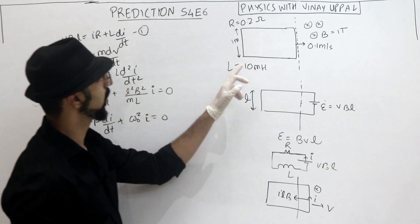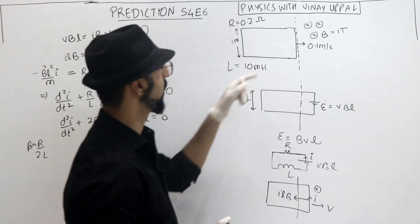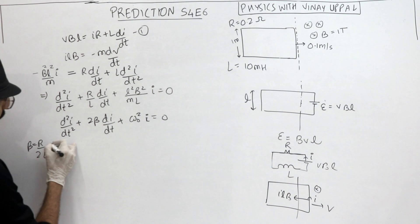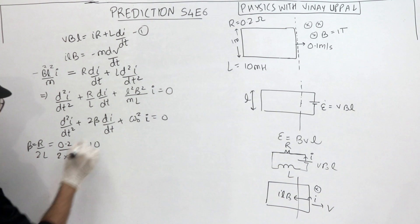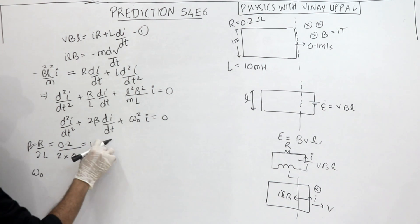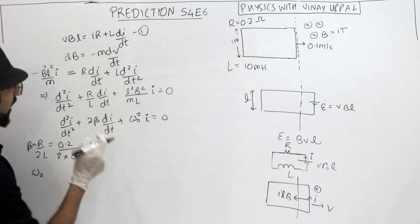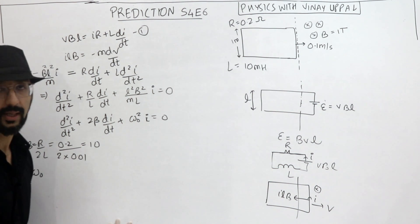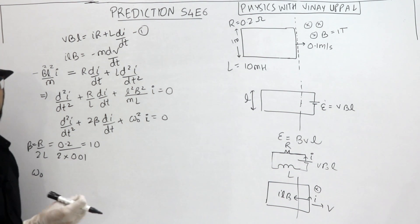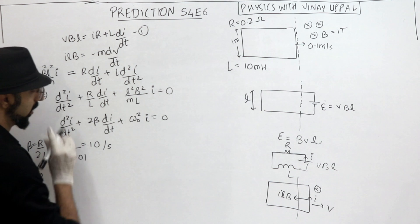So R by 2L means 0.2 ohms divided by 10 millihenry. So 0.2 ohms divided by 10 millihenry means 0.01. Okay, this will be 10. And whatever units, units kya ajaega is kya? Beta and omega naught dono ka units kya hota hai? It's the same as frequency, right? Per second.